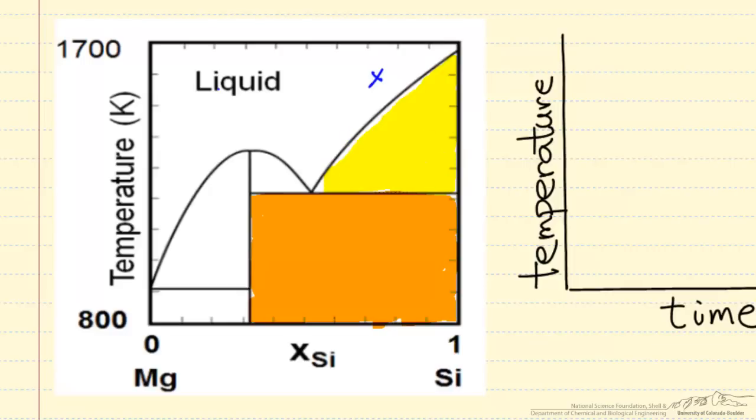The orange region corresponds to two solids in equilibrium. Picking a point corresponds to solid silicon in equilibrium with this compound, Mg2Si, which is a stoichiometric compound. We have two solid phases in equilibrium in this orange region.